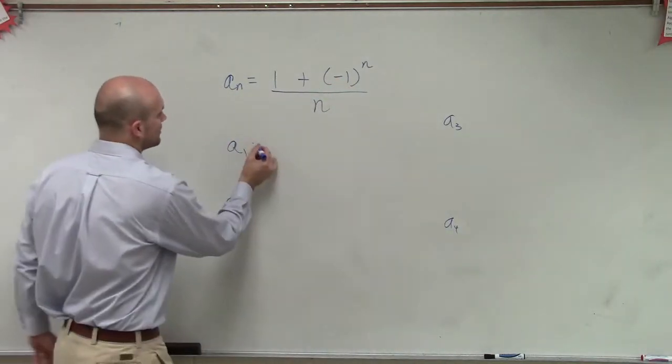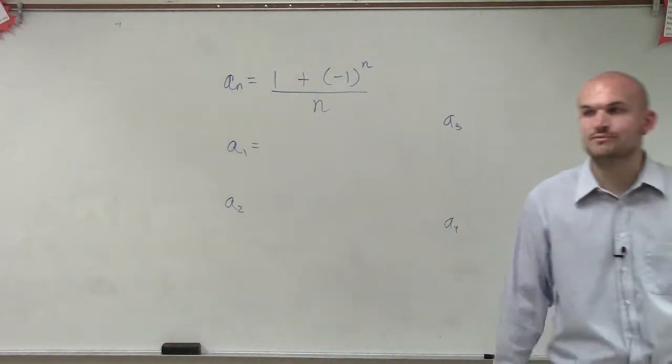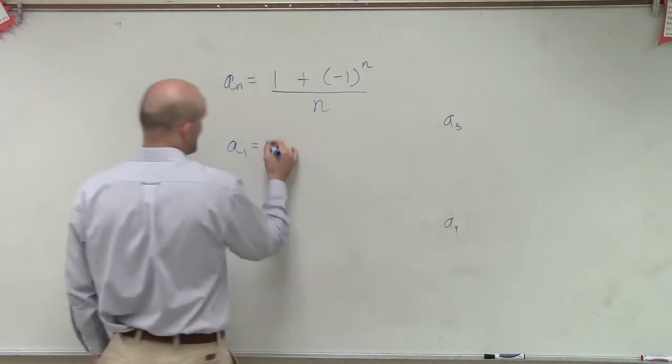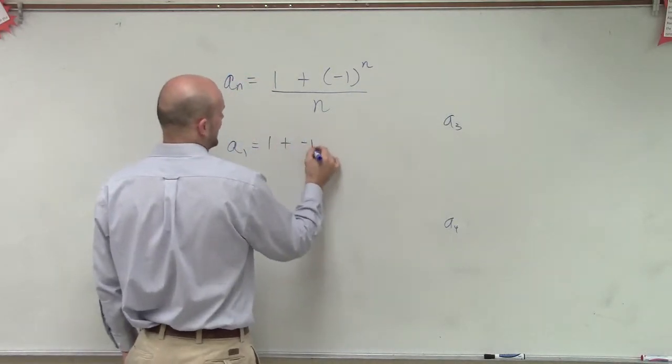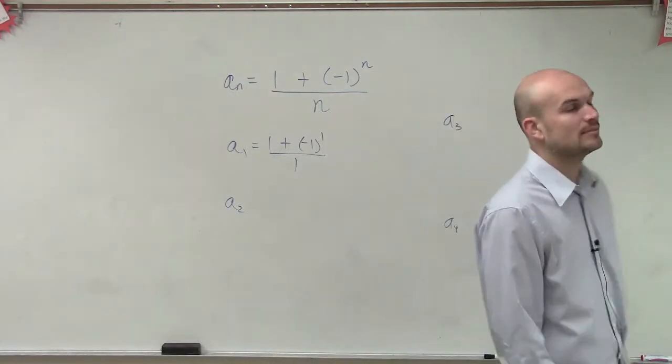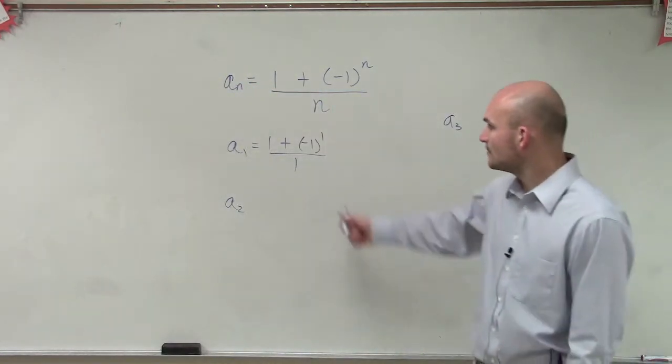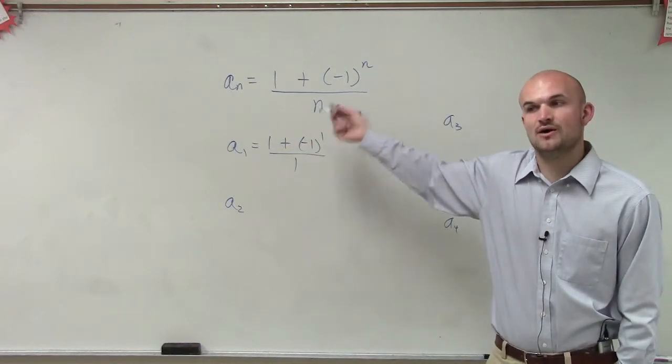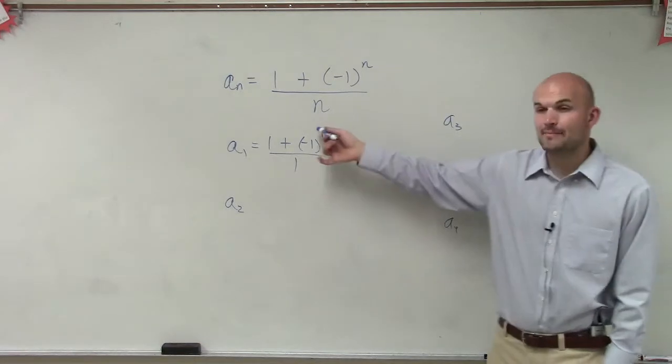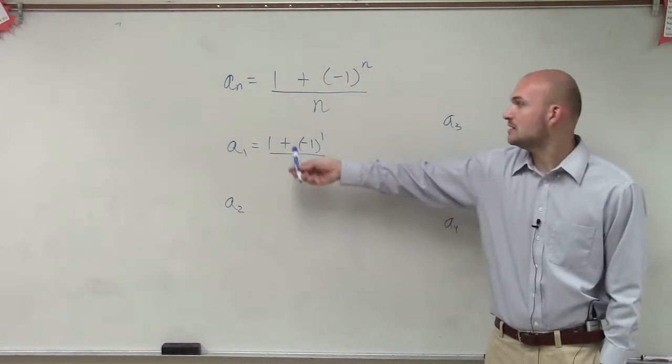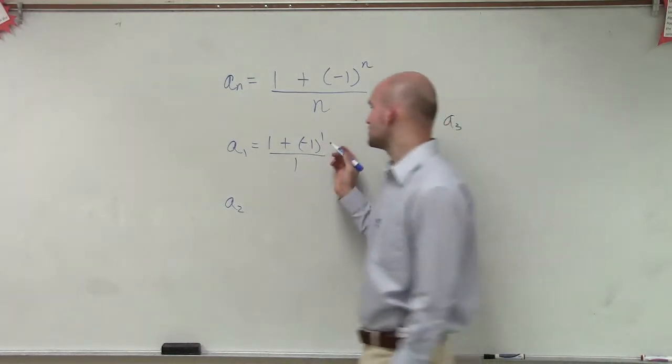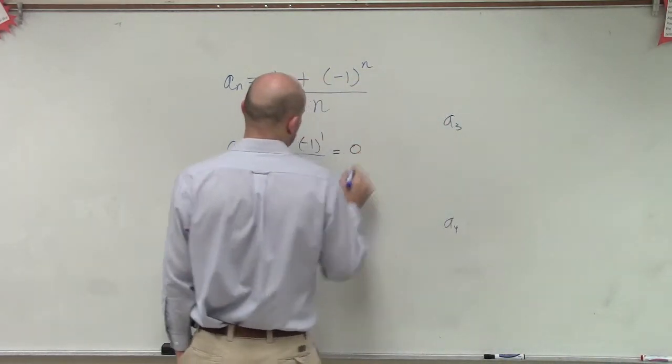So a_1, again, ladies and gentlemen, to find the first term, we're just going to plug in a 1 for our n. So in this case, we'll have 1 plus negative 1 raised to the first divided by 1. Now it's important, ladies and gentlemen, that we notice that we have this negative 1 to the first power. And we understand when we have a negative number raised to an odd power, that's just going to be negative. So 1 plus negative 1 is going to be 0. 0 divided by 1 is just 0.